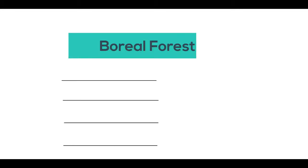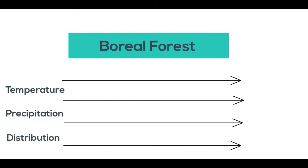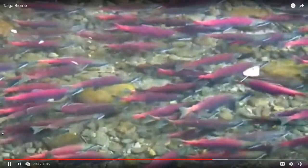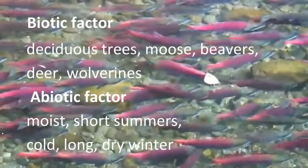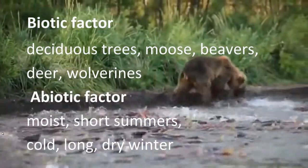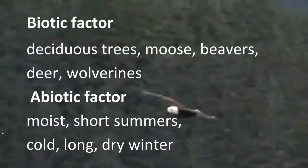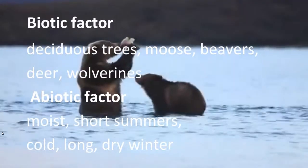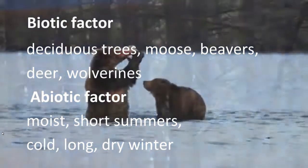The boreal forest is also called northern coniferous forest, or taiga. Its temperature ranges from minus 54 to 21 degrees Celsius. Its biotic factor includes deciduous trees, moose, beavers, deer, and wolverines. Its abiotic factor includes short, moist summers, and cold, long, dry winters.